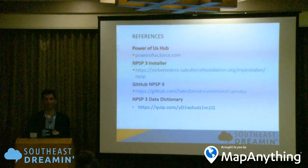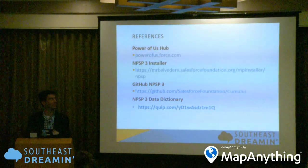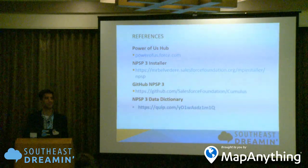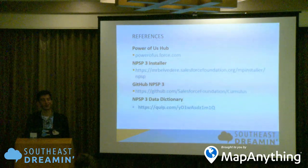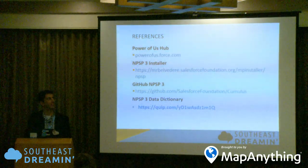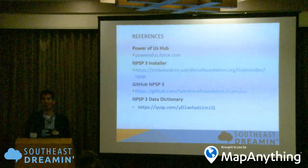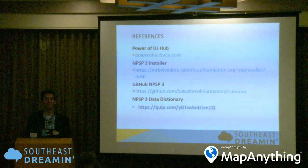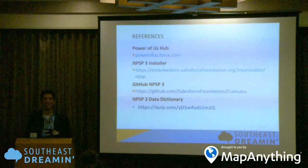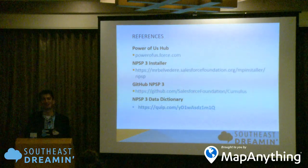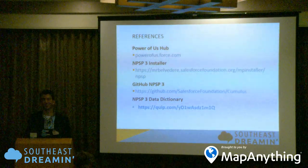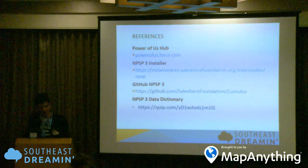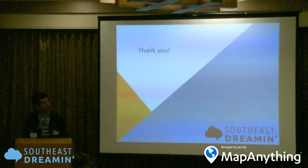Another tip: join lots of groups in the Power of Us Hub, but keep your email digest under control. With the exception of the release announcements group and maybe one or two other key groups, set that to weekly or daily digest or never. For the Hub itself, definitely set it to never — there are around 20,000 people in there.